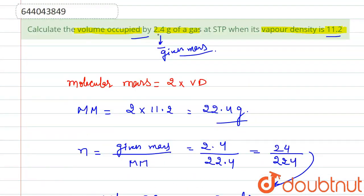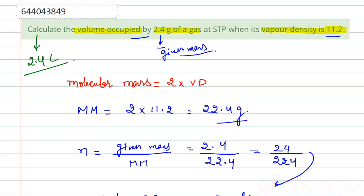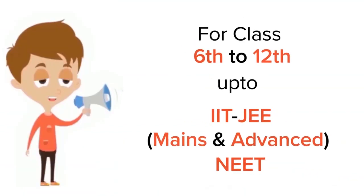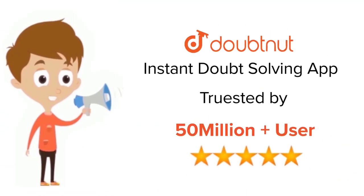So the question was asking: calculate the volume occupied by 2.4 grams of gas at STP when its vapor density is 11.2. The answer is: the volume occupied is 2.4 liters. Thank you.